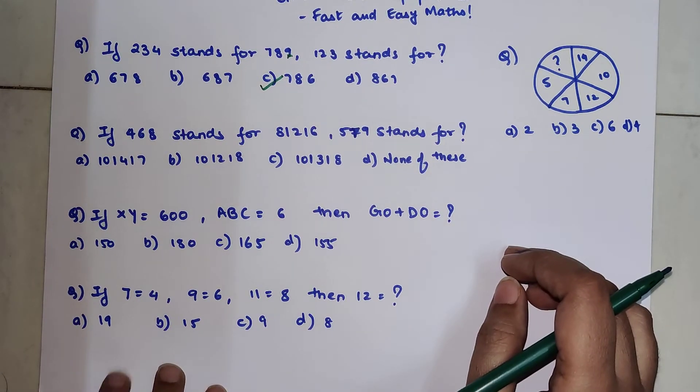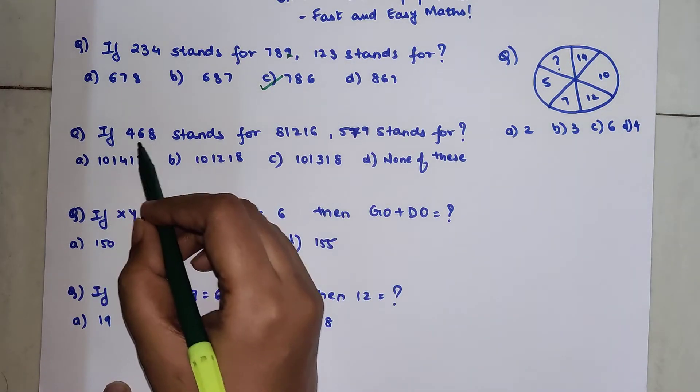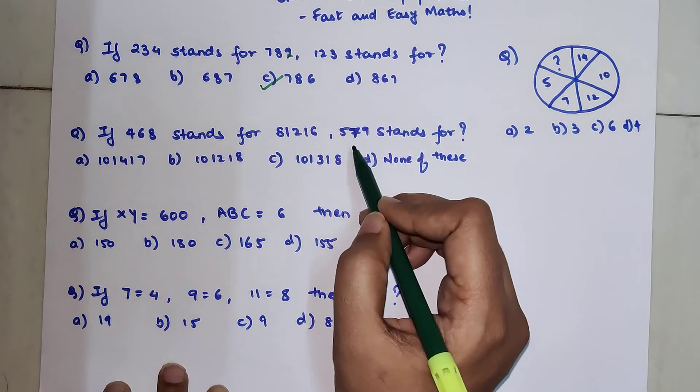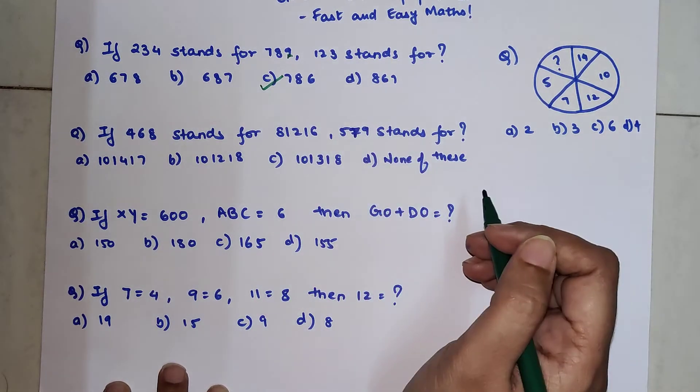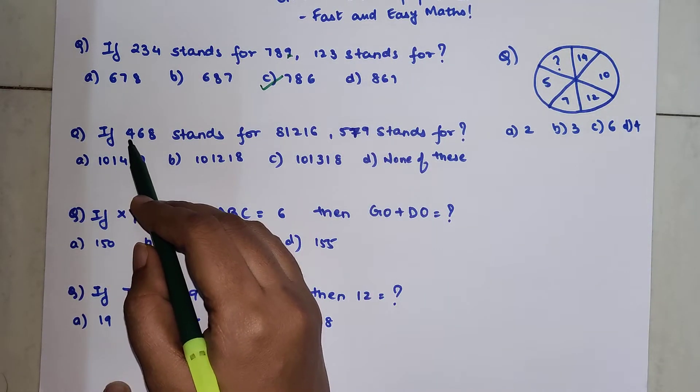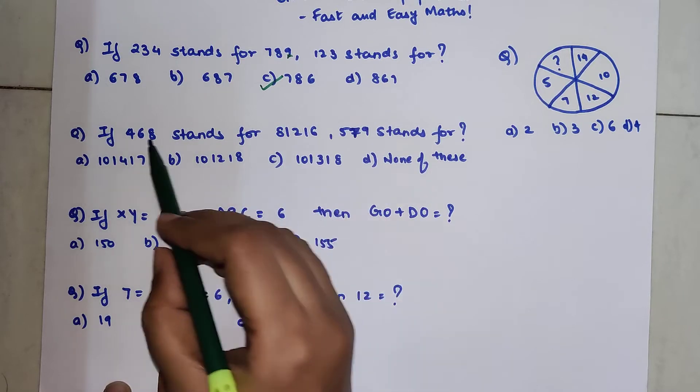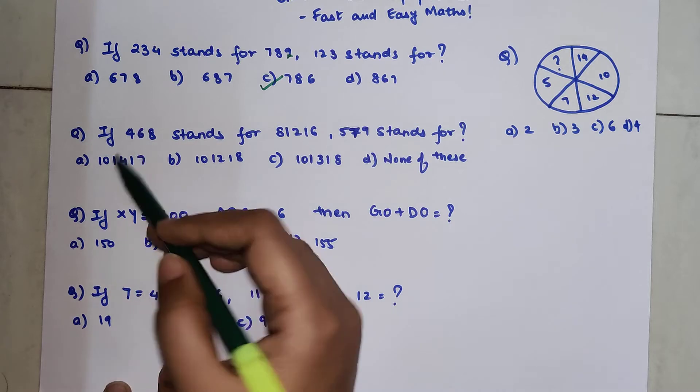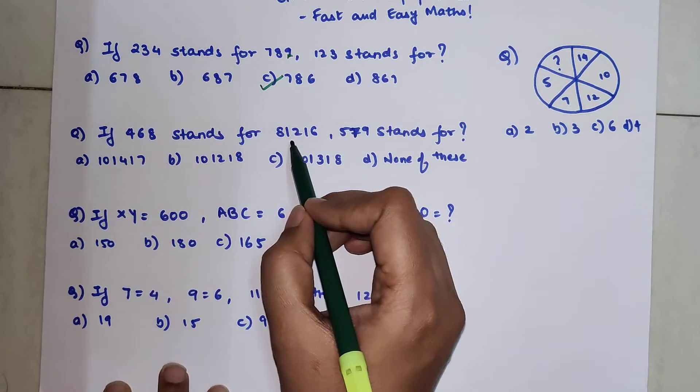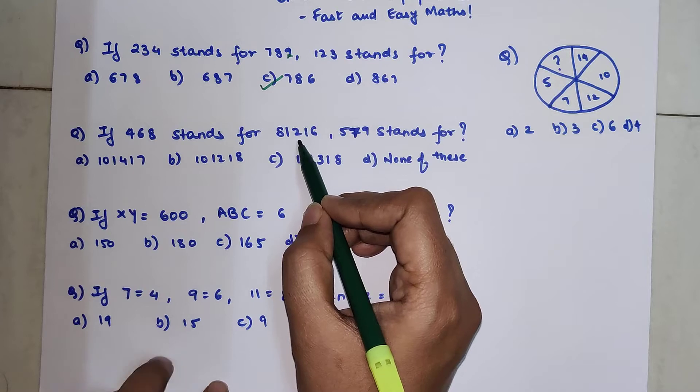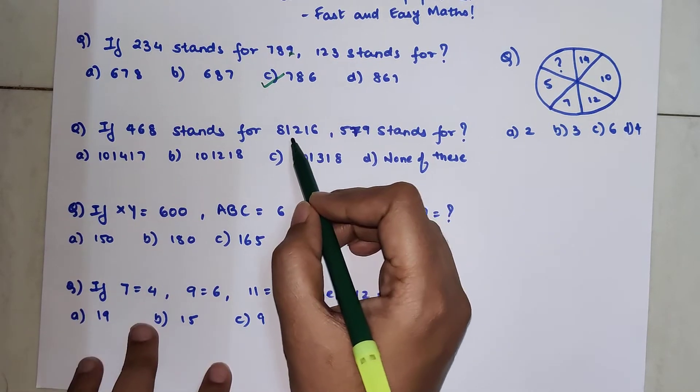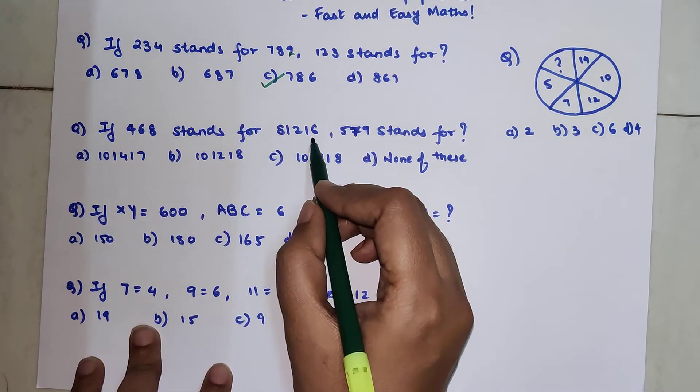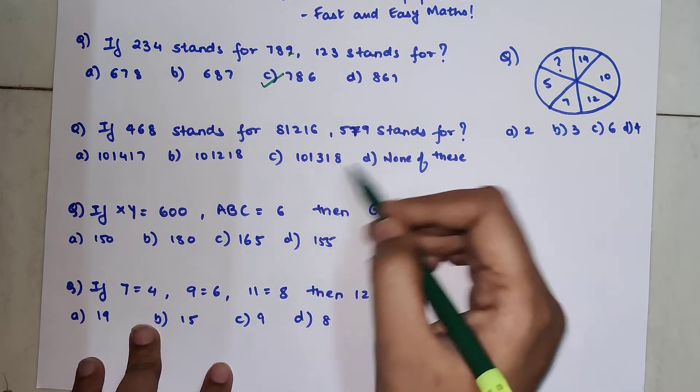So the next one is if 468 stands for 8, 1, 2, 1, 6 then 579 stands for what? Now if you look over here 4 and the first digit over here is 8. That means 4 when multiplied by 2 gets you 8. Now 6 when multiplied by 2 gets you 12 but the next digit is just 1 but if you look this 1 is followed by 2. So basically the next 2 digits are 12 and 8 whenever you double it you get 16. So basically all the digits are getting doubled.